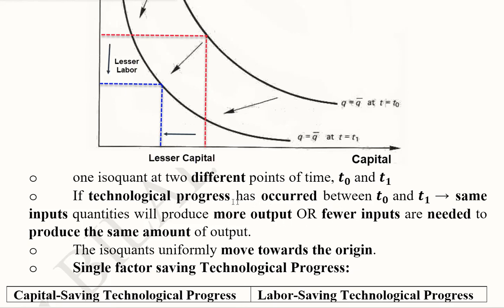It can also be understood in the way where we can say that the same level of inputs now can produce more output than q bar. But we kept the output constant and the effect was observed on the inputs that they are required lesser than before.